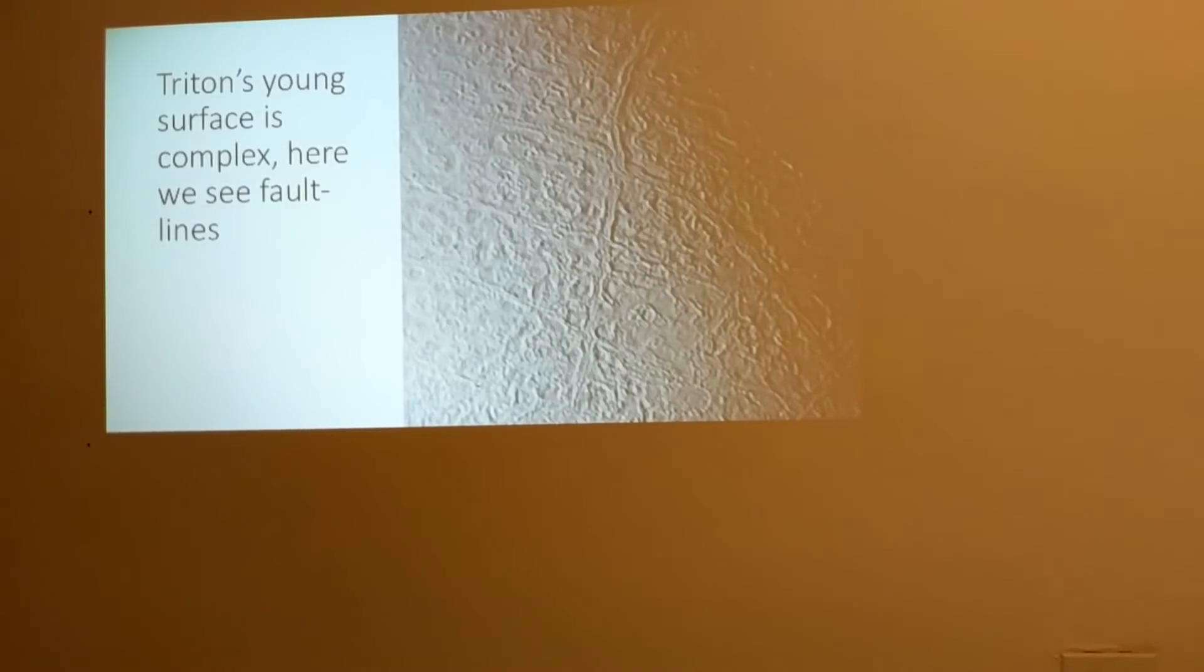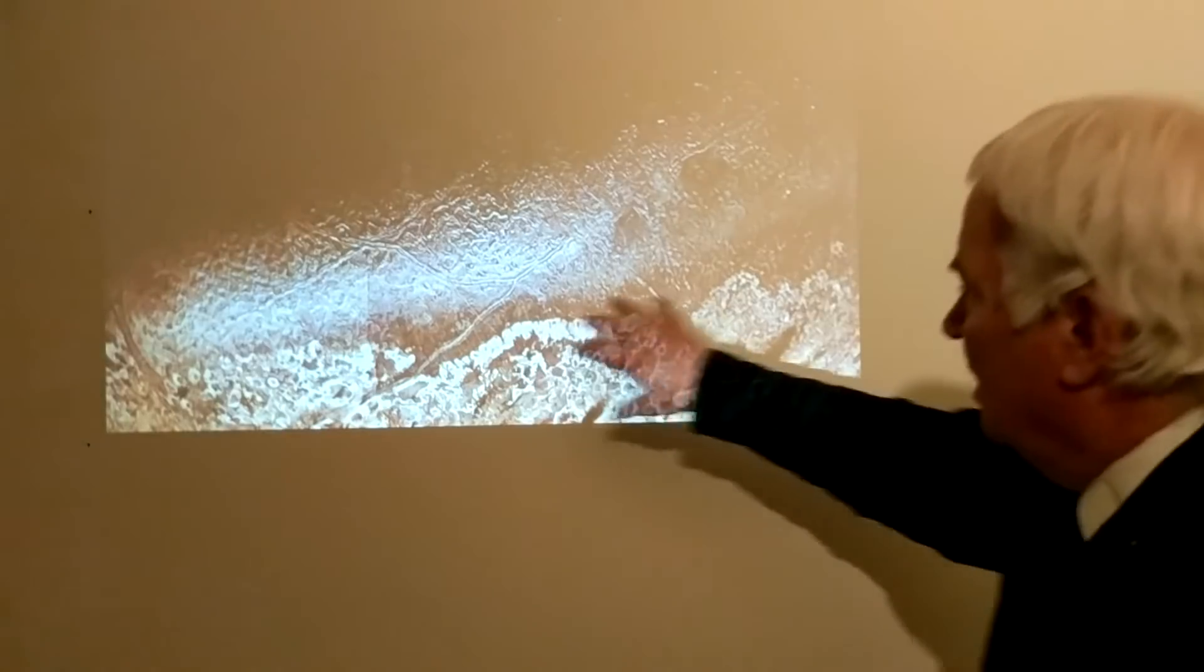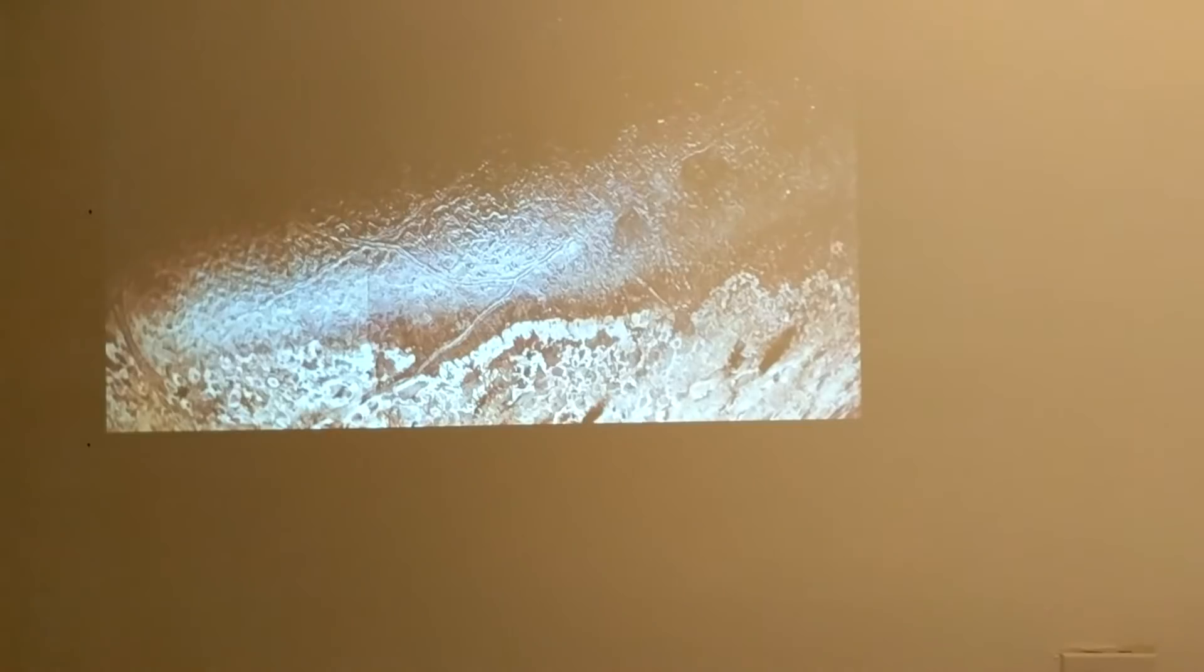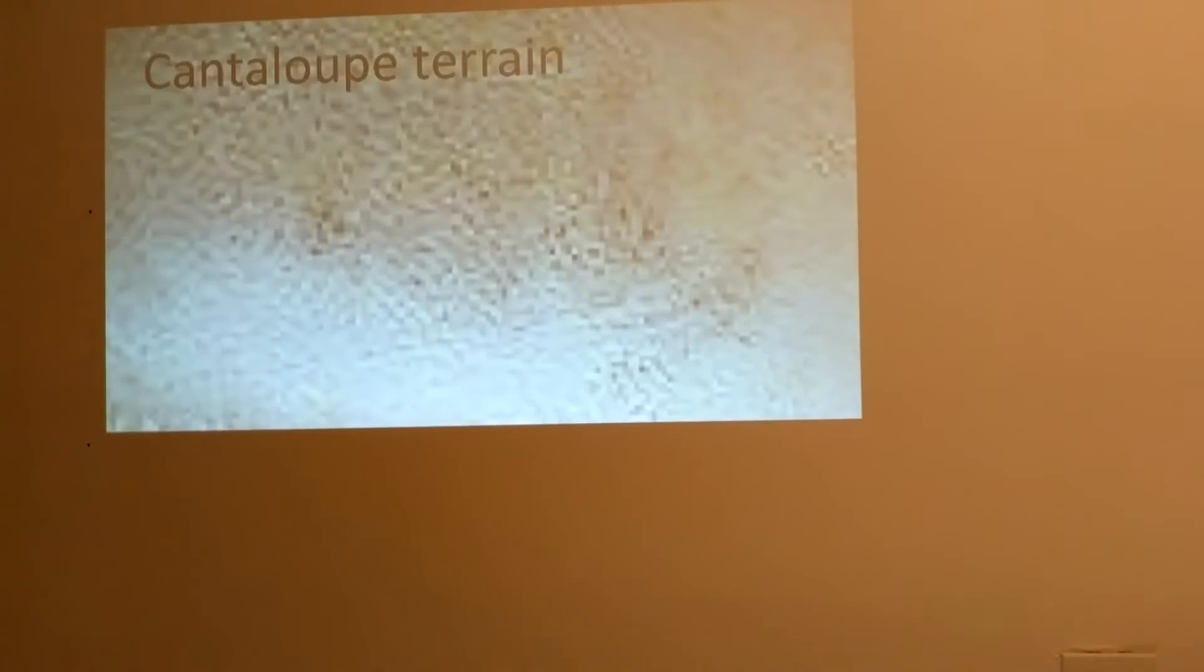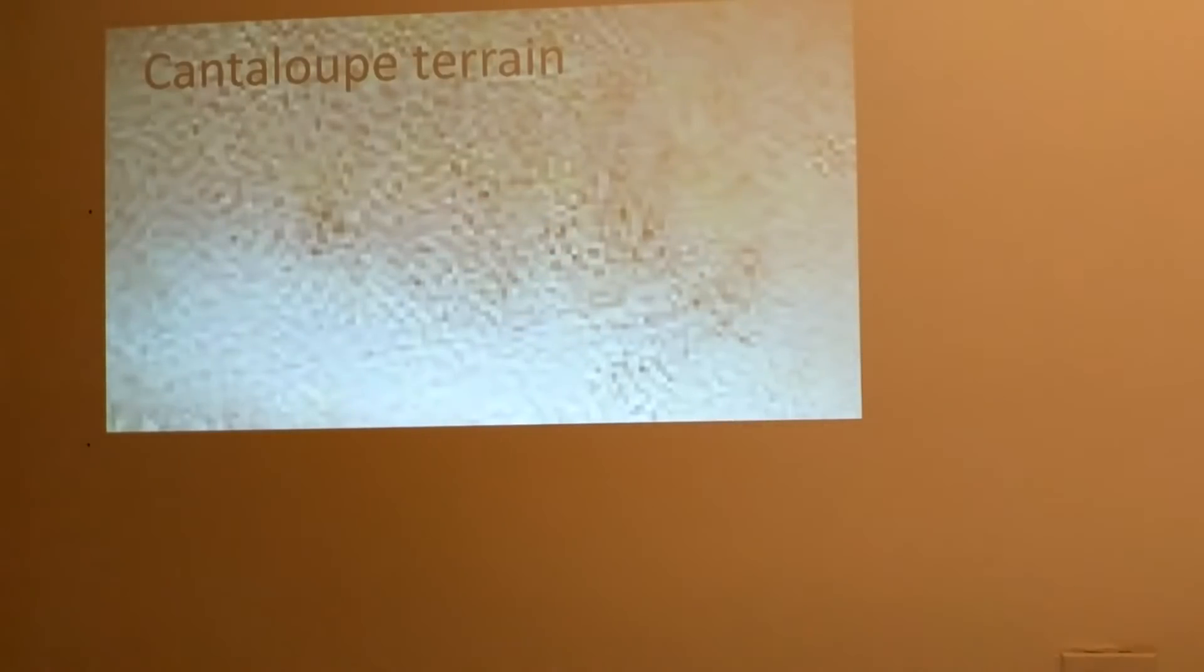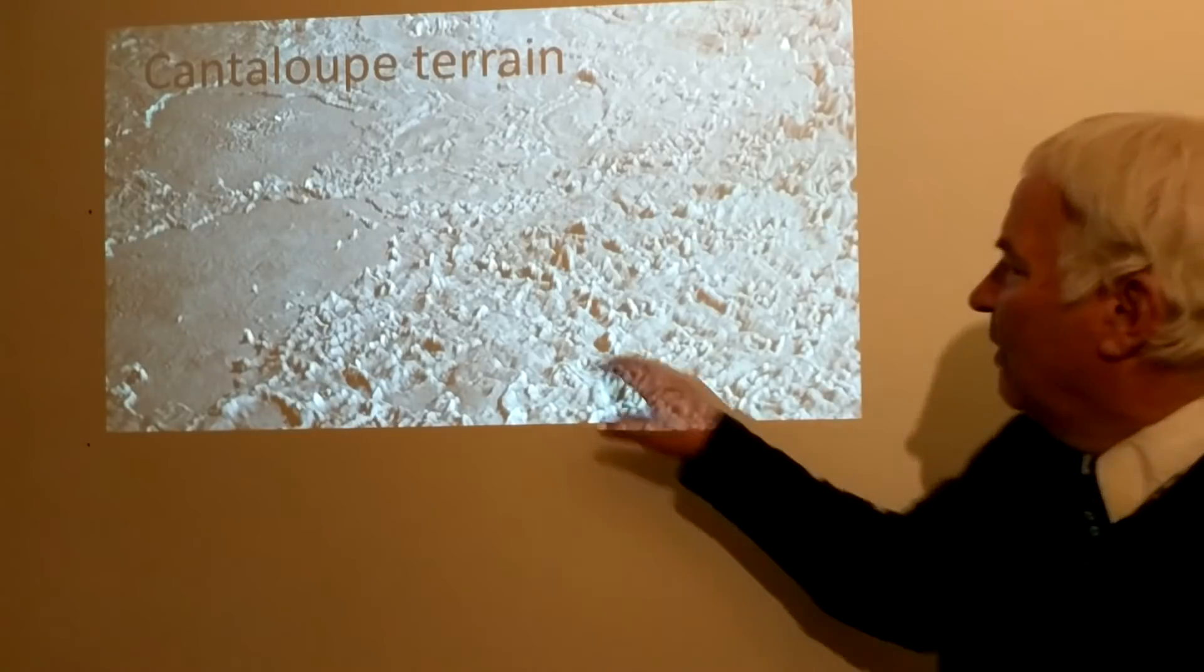As we look closer at this cantaloupe terrain, this is a false color, but it allows us to see a lot of the details, the complex details of the features on Triton. We have this cantaloupe terrain looking up closely, and we can see that it does have a lot of these kind of features that make it look like a cantaloupe surface. But when we look really close, we can see that that's not at all what we have. We have what looks to be pillars of ice.